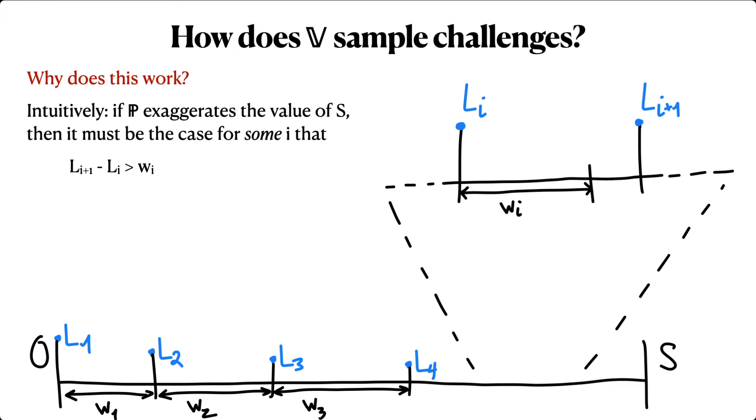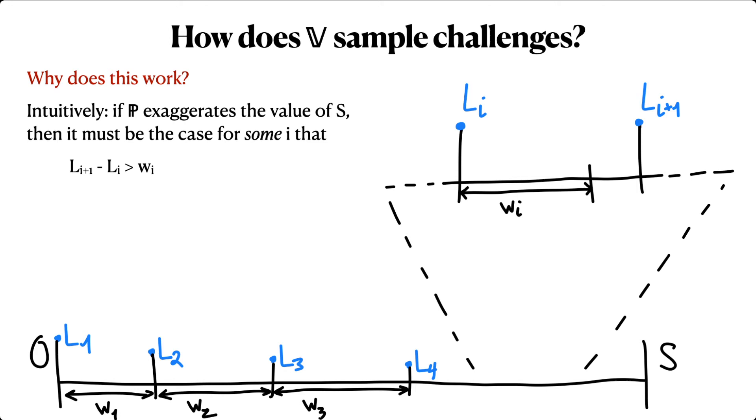More specifically, there must be some index i such that the value L sub i plus the corresponding attester's weight W sub i is less than the value L sub i plus one, the next sub-range start.